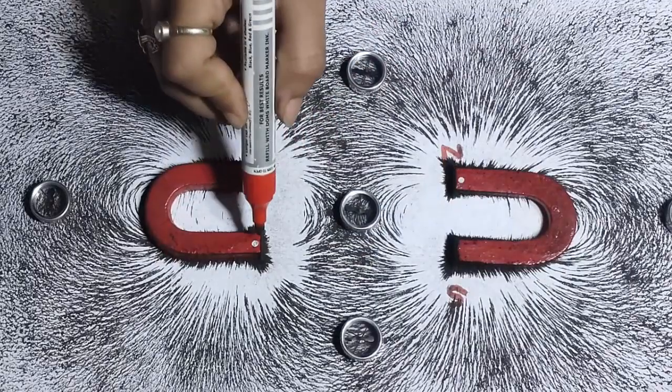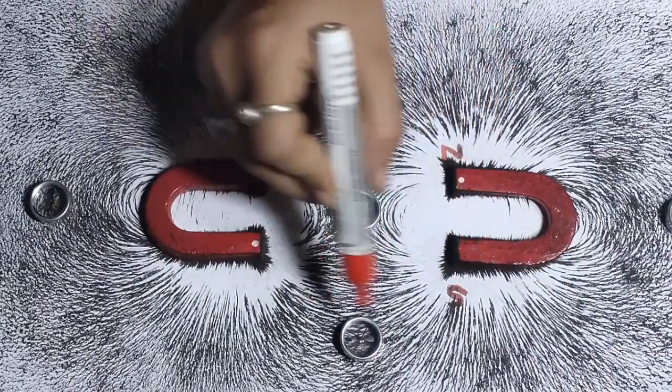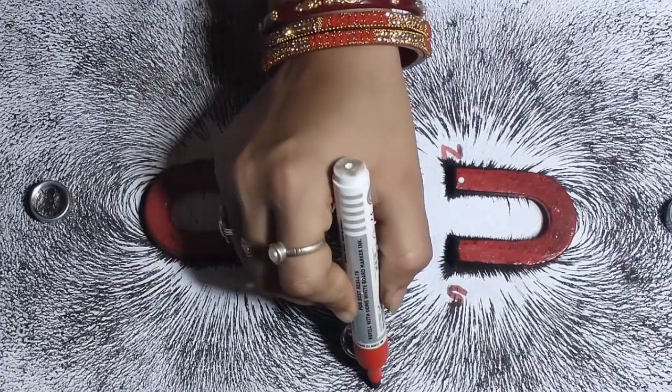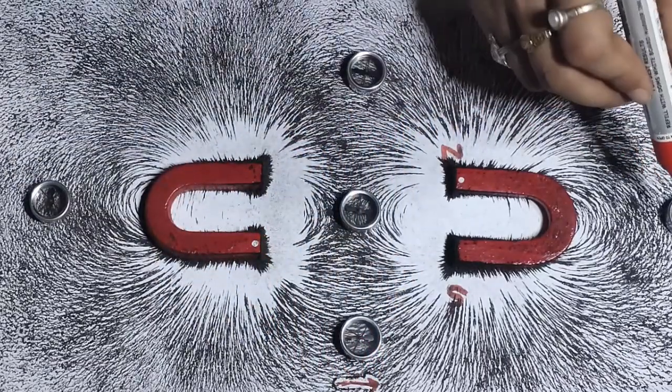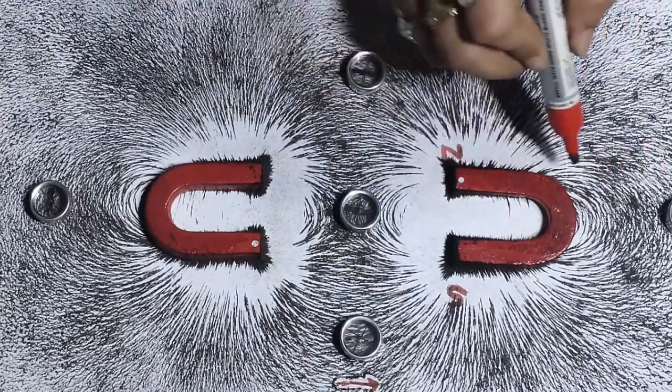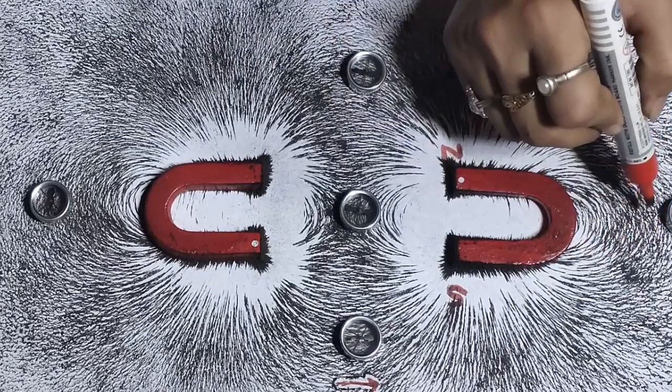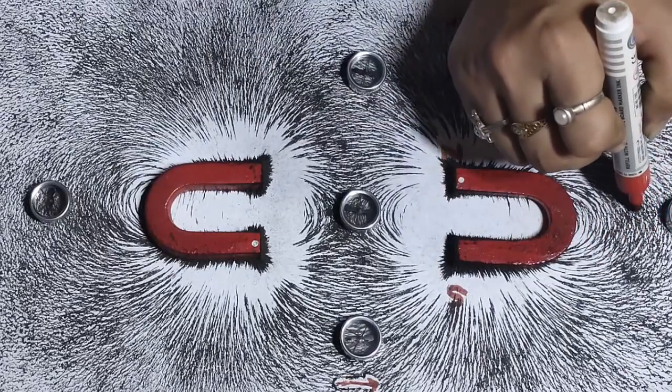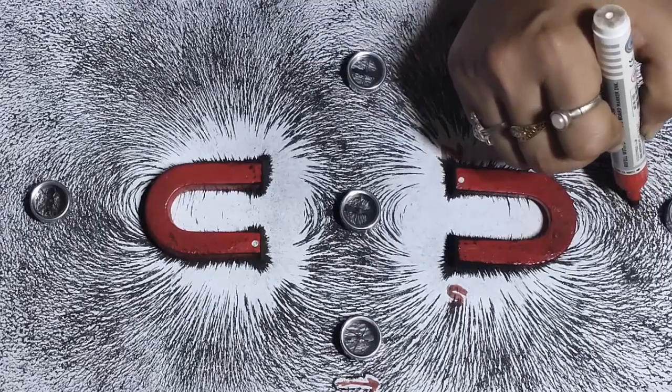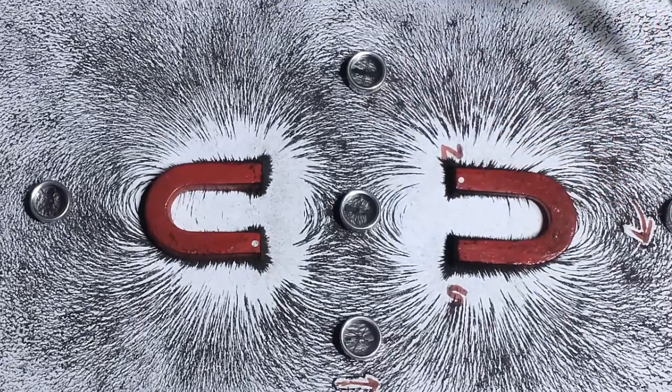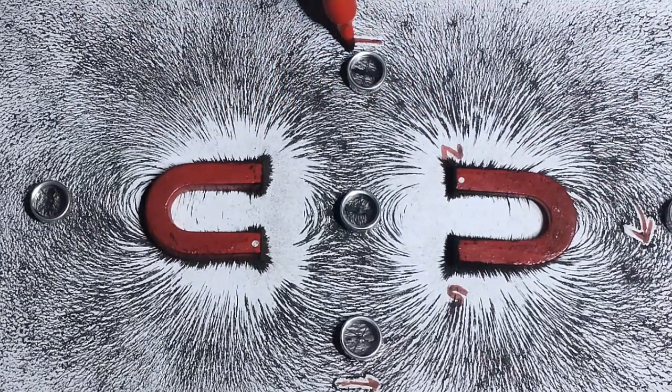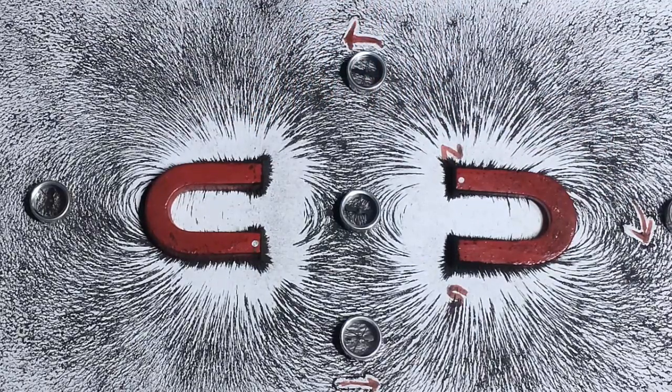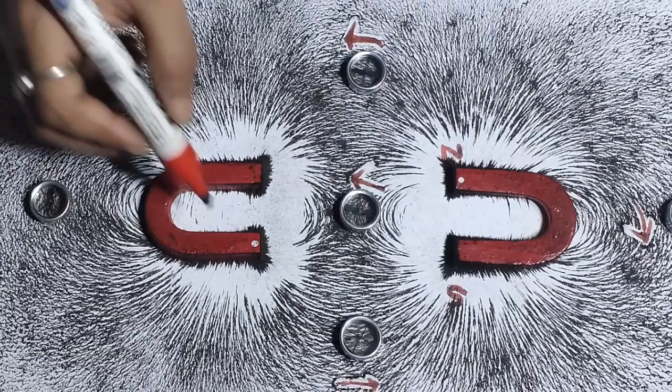See this is the North Pole, the lines of force are coming from North to South and it is aligning itself as per the pattern of the iron filings. This is North, the lines of force are coming from North to South, this is the direction. So all the needles align themselves as per the pattern of the iron filings.